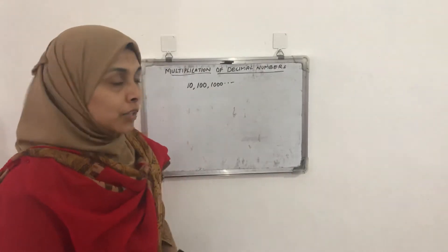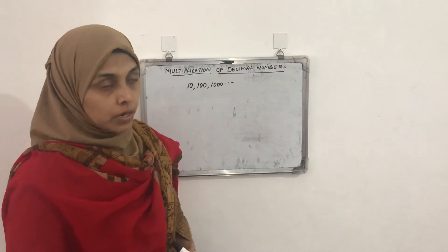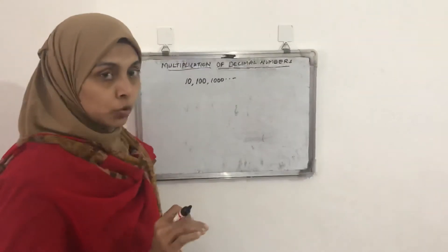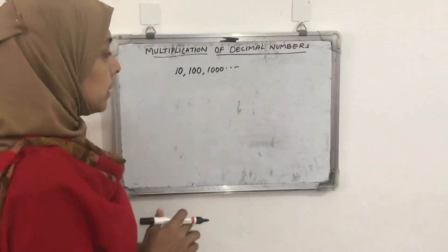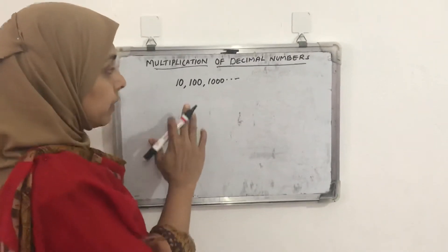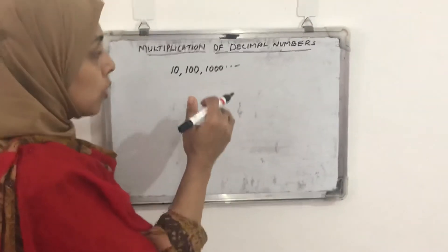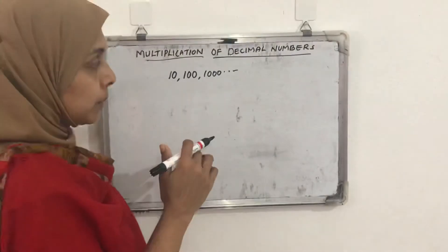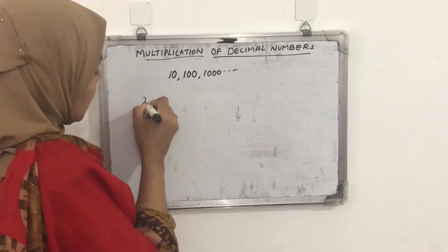Hello, good morning students. Today we will discuss multiplication of decimal numbers. Before that, I hope all of you completed the addition and subtraction questions as homework. Now for multiplication of decimal numbers, first we discuss what happens when a decimal number is multiplied with 10, 100, 1000 — the multiples or powers of ten. What will the product be?